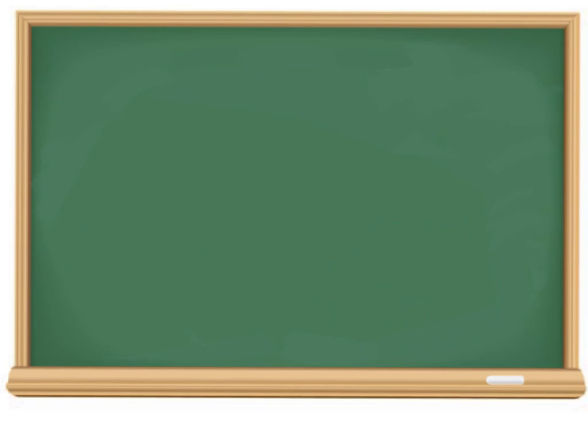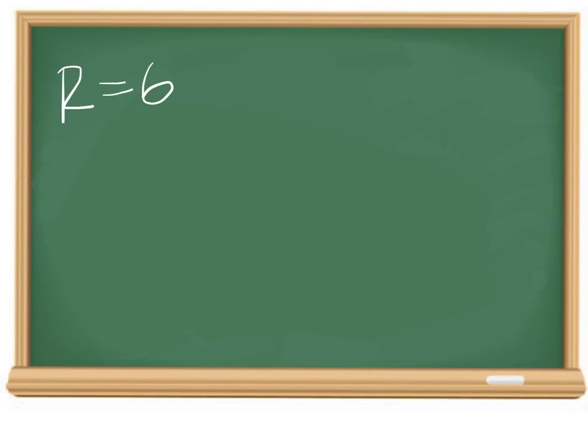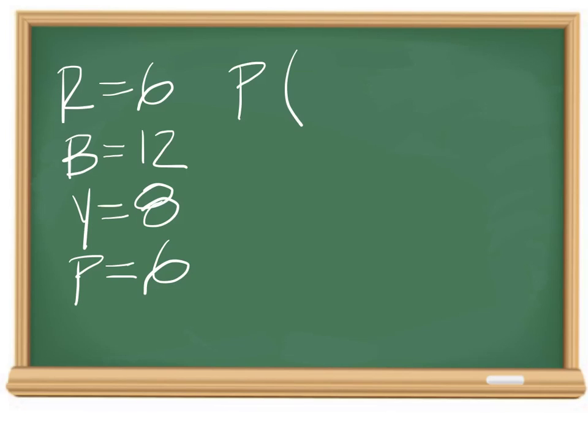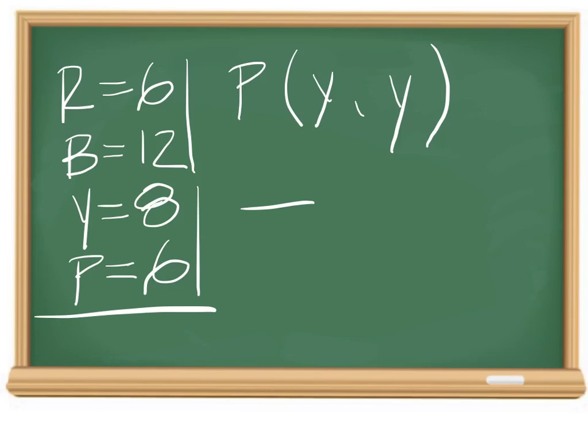Example 4. We have 6 red, 12 blue, 8 yellow, and 6 purple. We want to find the probability of drawing 2 yellows in a row. The total amount of marbles will be 18 plus 14 is 32. And for yellow, we have 8. But if we draw one and it's yellow, what do we have to multiply by?